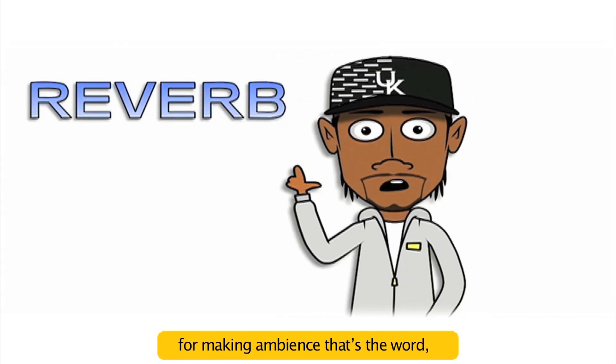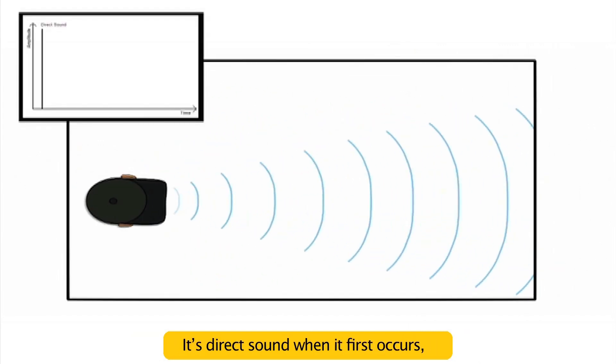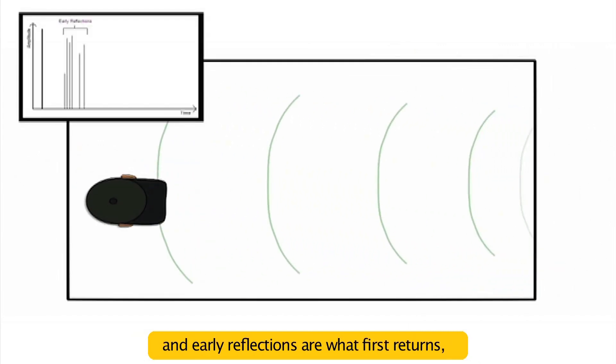In particular, check the reverb for making ambience—that's the word. As sound gets reflected or absorbed, you can observe a change in the way it's heard. It's direct sound when it first occurs, and early reflections are what first returns. They become reverberations where individual waves can't be discerned.